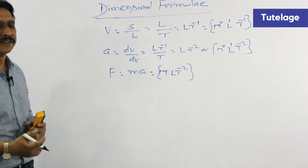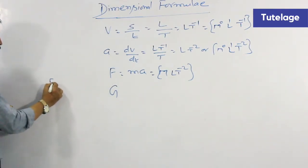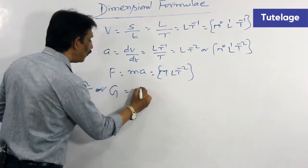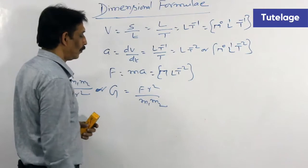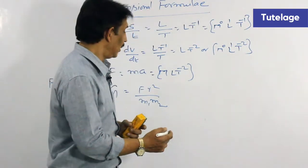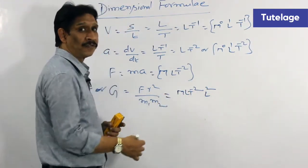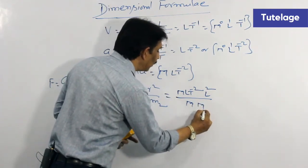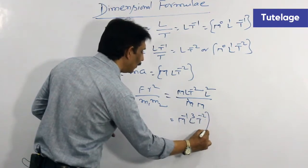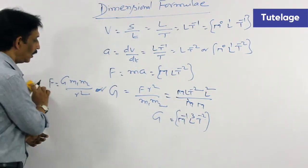Now let us see the dimensional formula for gravitational constant G. The basic formula is F equals G M1 M2 by R square, so G equals F R square by M1 M2. F is force M L T minus 2, R square is distance squared L square, divided by M1 and M2 which are two masses M squared. This gives M minus 1 L cube T minus 2. So the dimensional formula for gravitational constant G is M minus 1 L cube T minus 2.